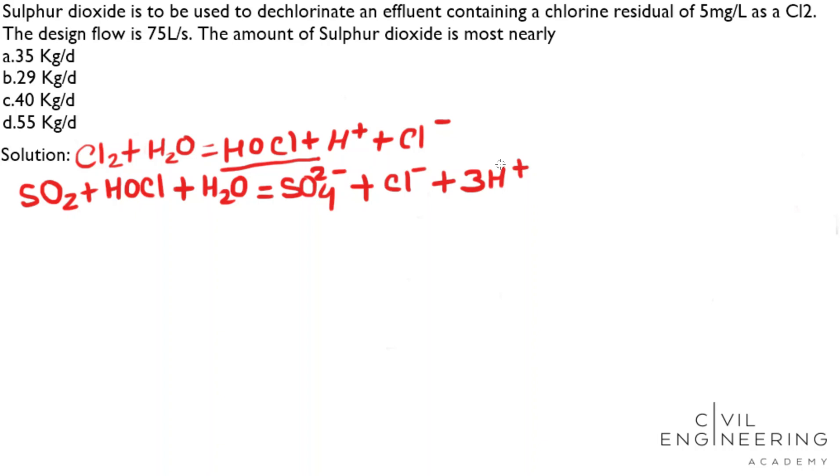So, here we can see one mole chlorine reacts with one mole water and produces one mole hypochlorous acid. And this hypochlorous acid reacts with one mole sulfur dioxide.